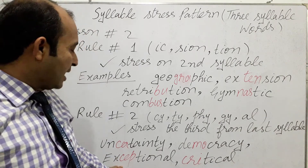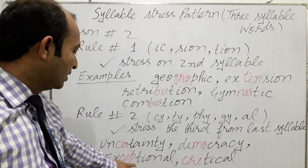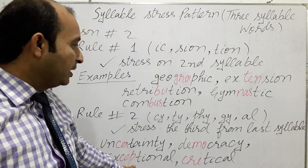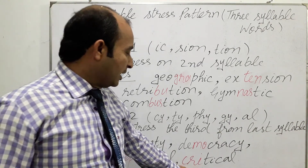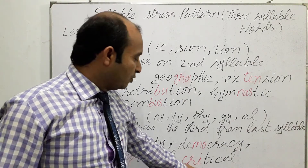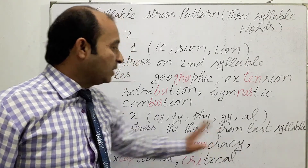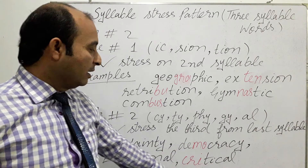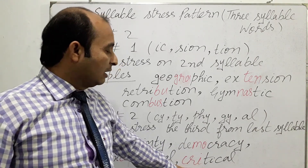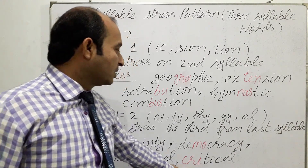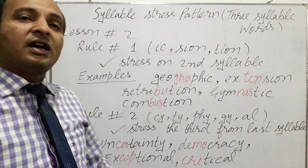Another example we have is 'exceptional' — exCEPtional. We are stressing on 'cep', which is the third from the last syllable. Another word is 'critical'. We are stressing on 'crit', the third from the last syllable. We don't say 'critiCAL' — it's 'CRItical'. We are stressing on the syllable which is third from the last. So these were the two rules for three syllable words. Thank you.